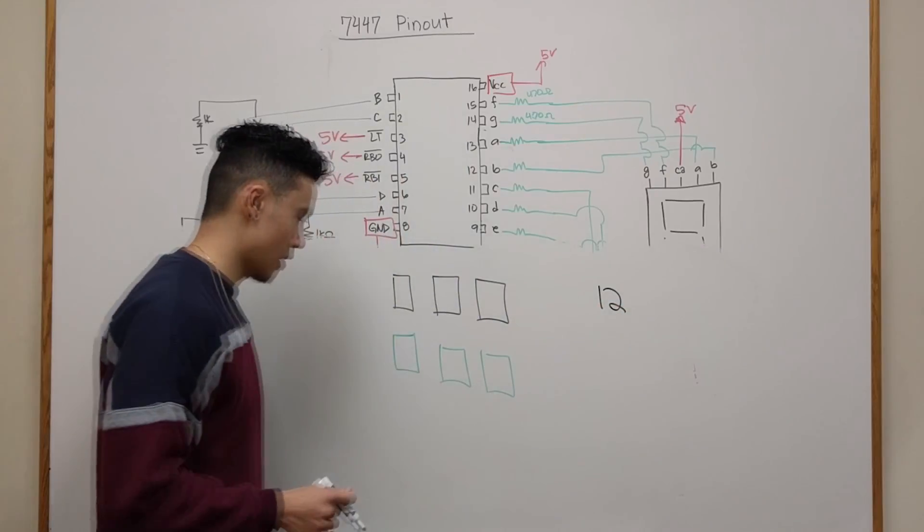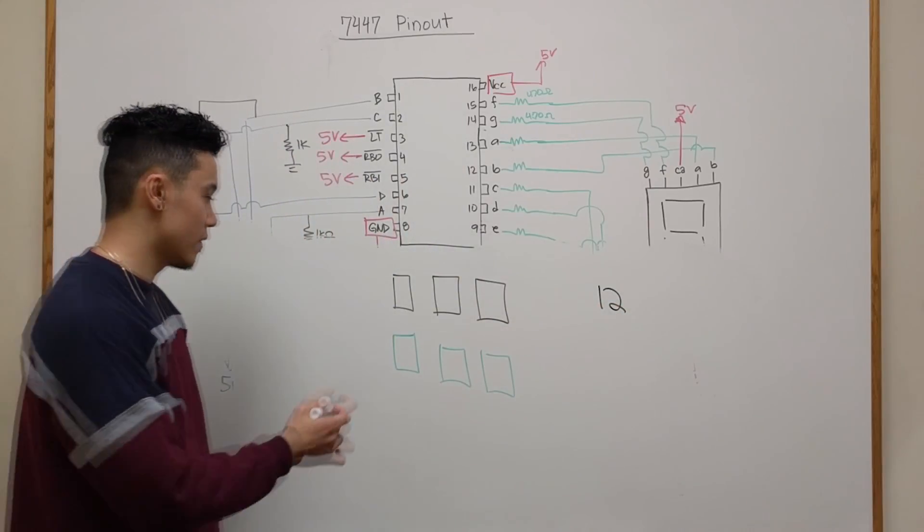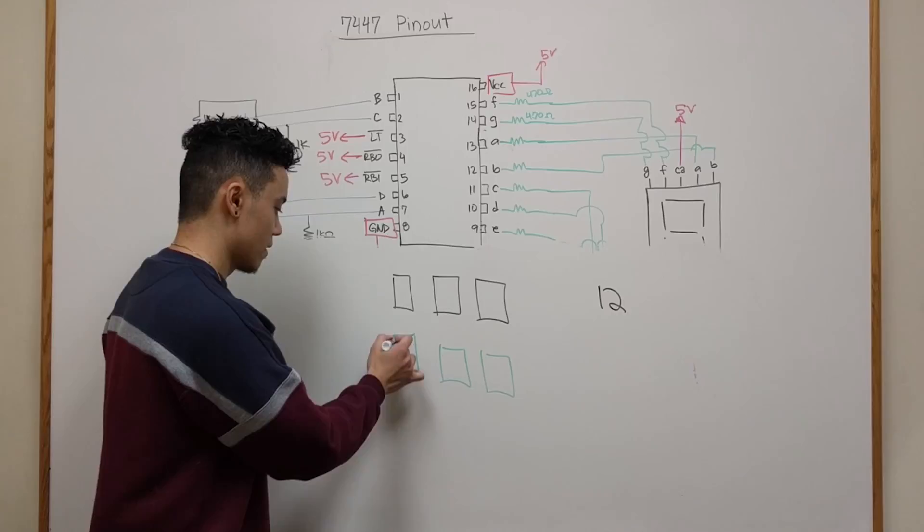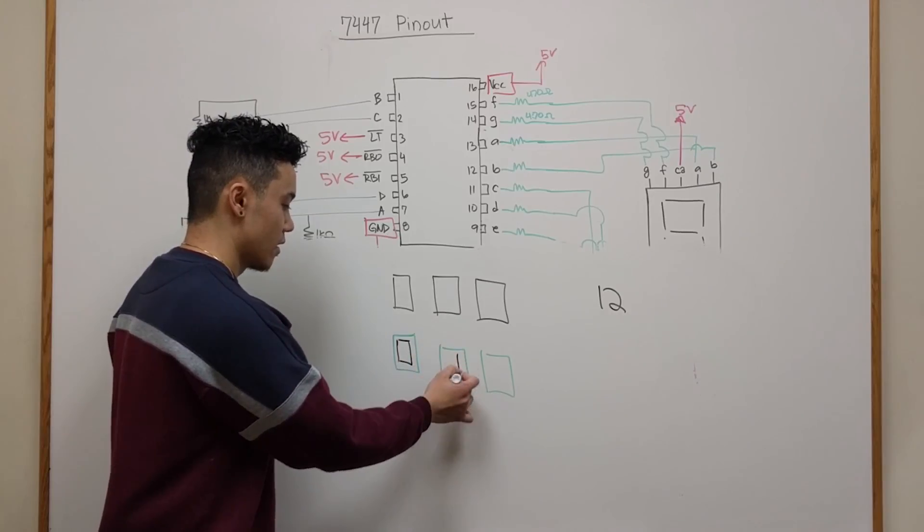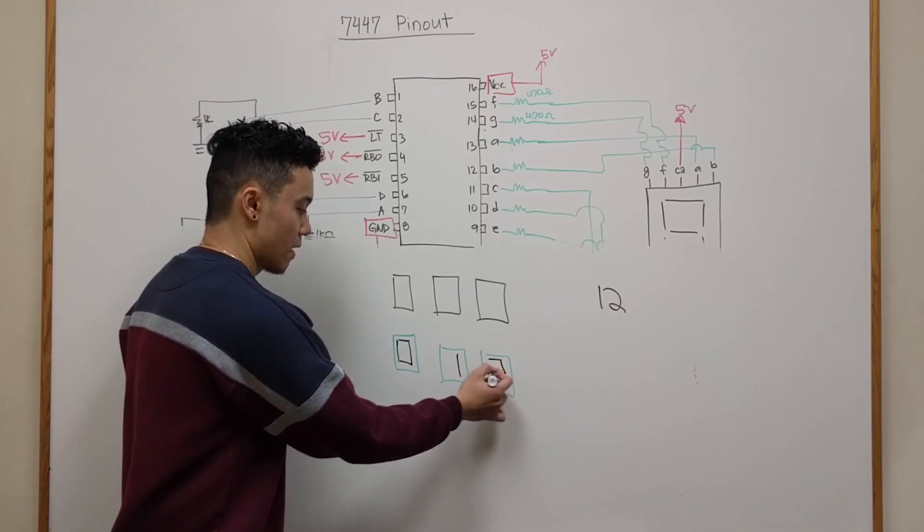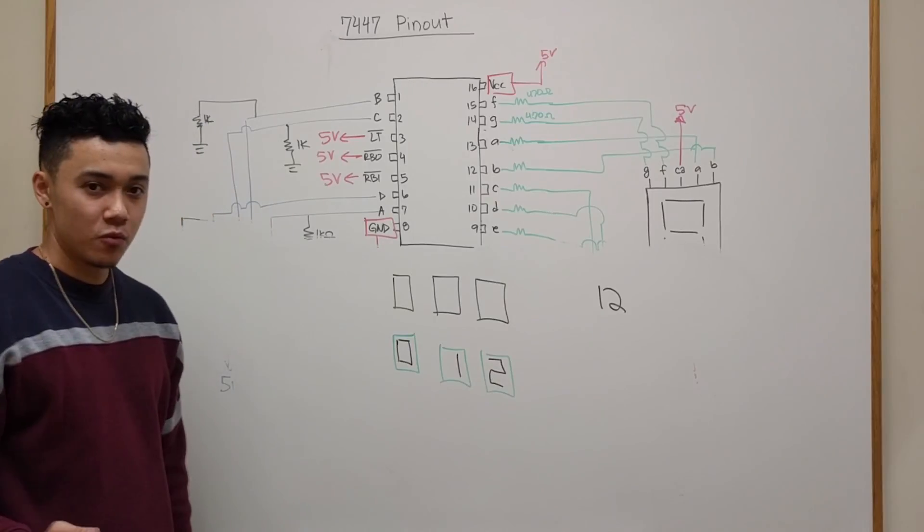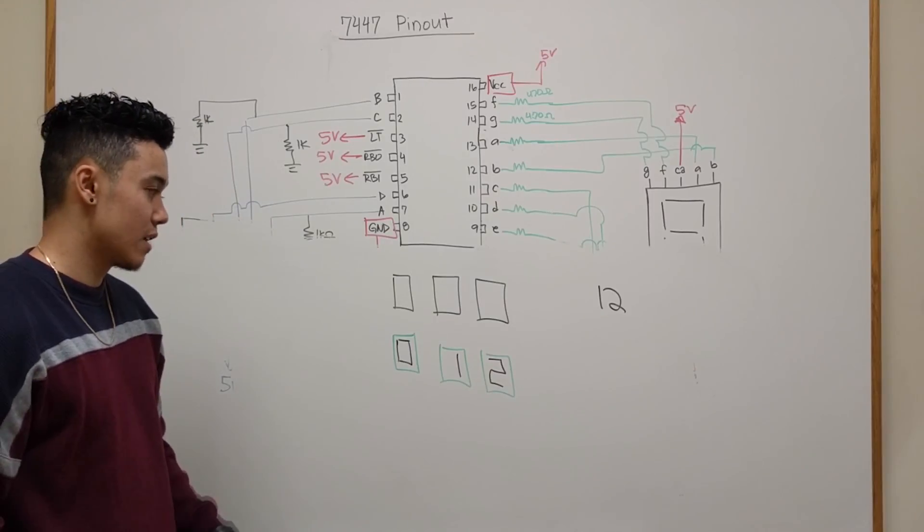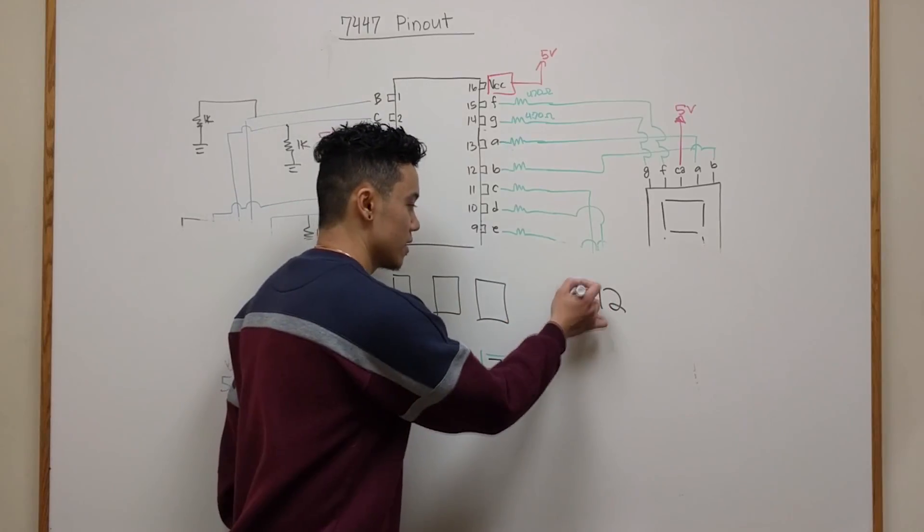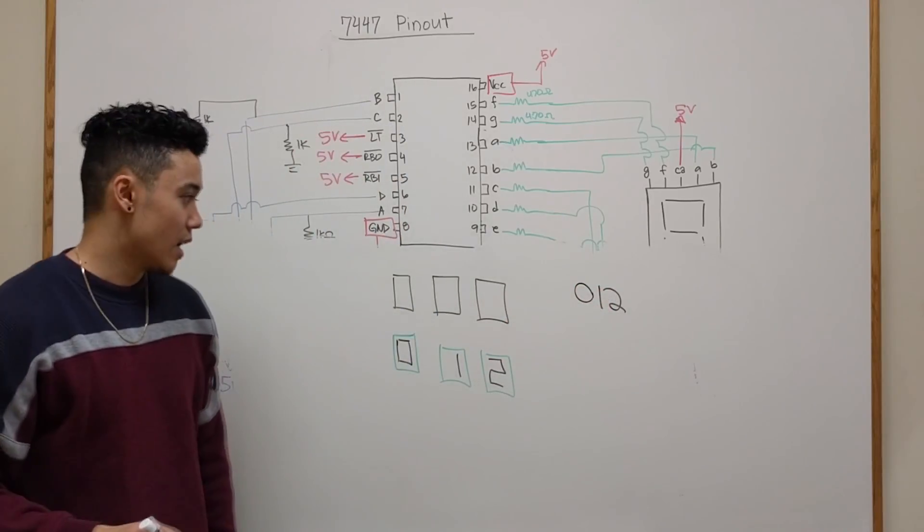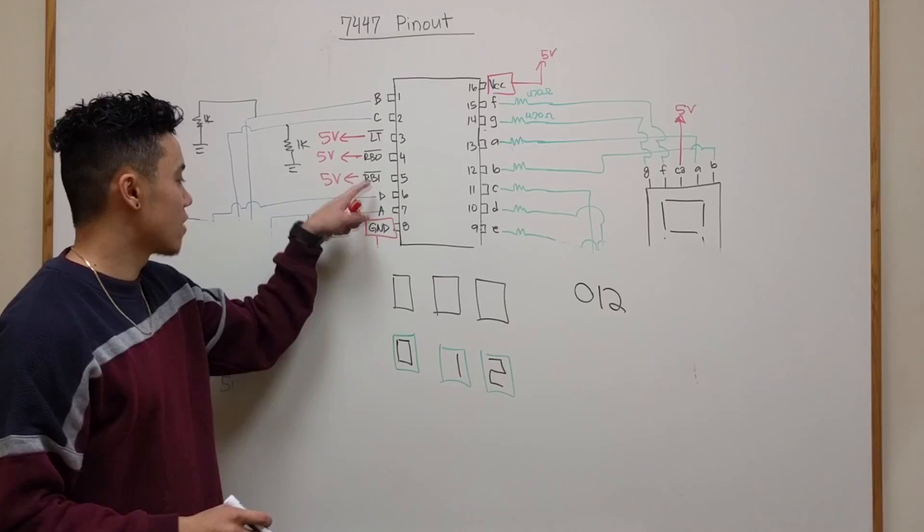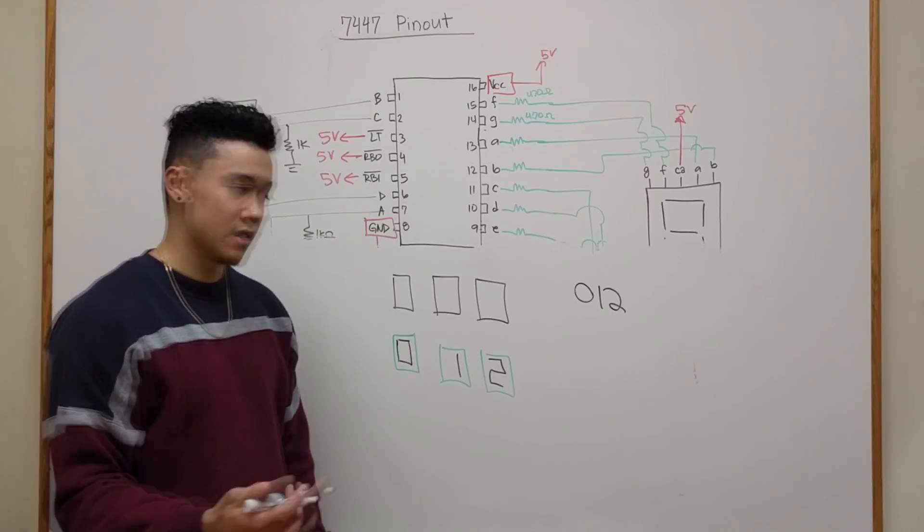Now suppose that I wanted to display the number 12. Well in that case you're going to have a 0 here. So you're going to have a 0 here, you're going to have a 1 here, and you're going to have a 2 here. But when we do write numbers in real life, we don't ever use this leading 0.